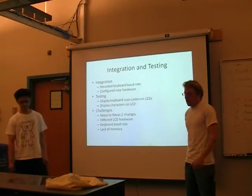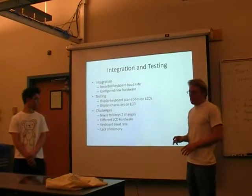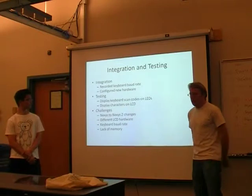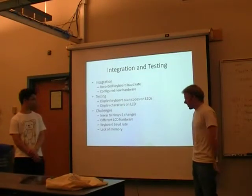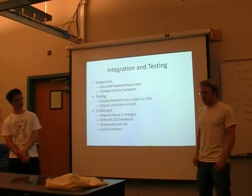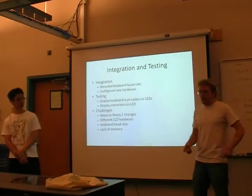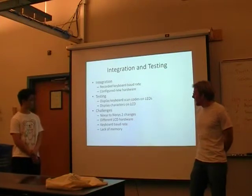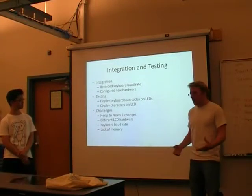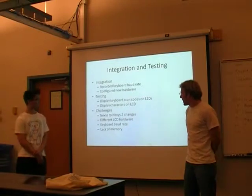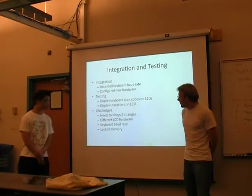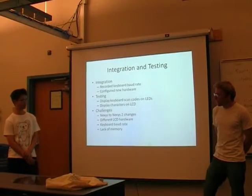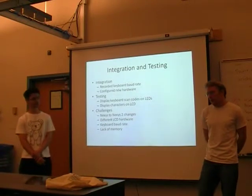We first tested the scan code: you press a key on the keyboard, it sends the scan code, then you release the key and it sends the scan code followed by the scan code again. We used the LEDs to test — sending the scan code directly to the LEDs so pressing a key represents the scan code in binary on the LEDs. From there we moved to displaying characters on the LCD, then used that to check for commands. We used a lookup table to go from scan codes to ASCII characters — about 200-something lines, a fairly large lookup table that used a significant amount of memory.